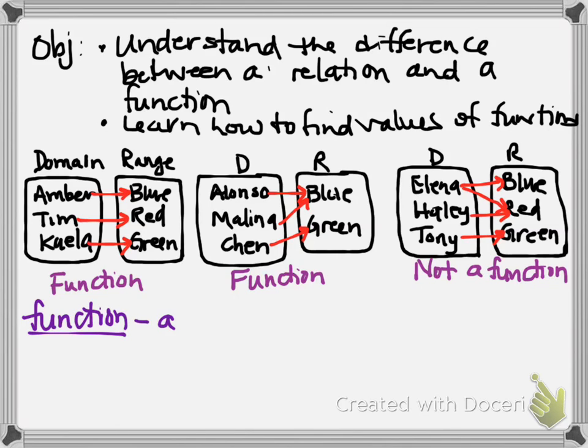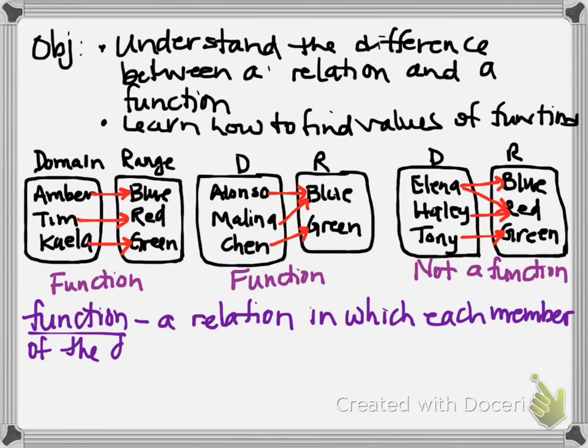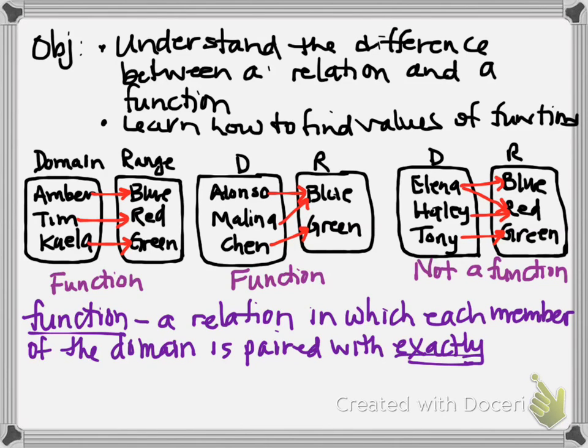So it's a relation. Remember, relation's just a set of data, and most of the times it's ordered pairs. So it's a relation in which each member of the domain is paired, and here comes the key part, with exactly one member in the range.